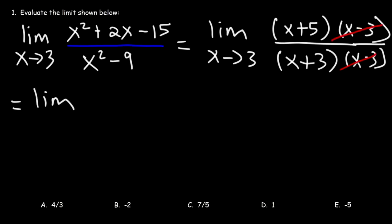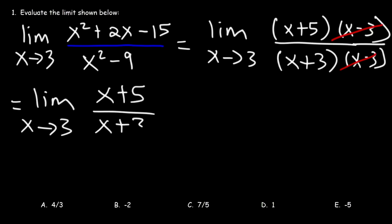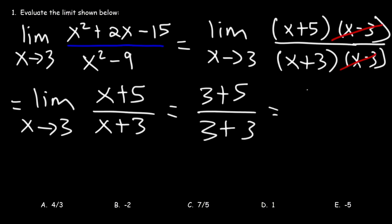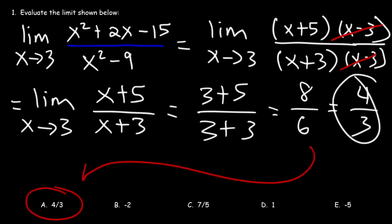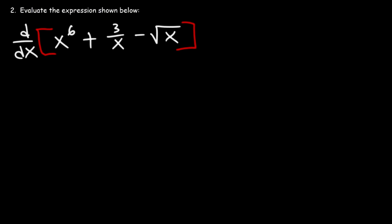After canceling, we have the limit as x approaches 3 of x plus 5 over x plus 3. Now we can use direct substitution: 3 plus 5 is 8, and 3 plus 3 is 6. Dividing both by 2 reduces to four over three, so A is the correct answer.